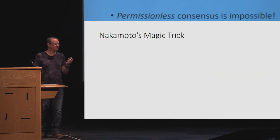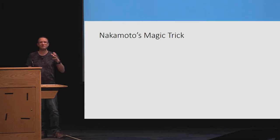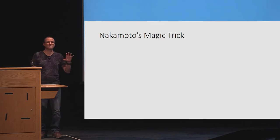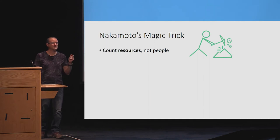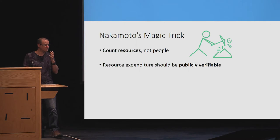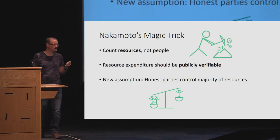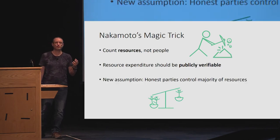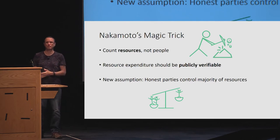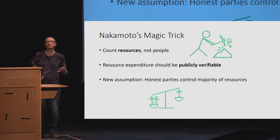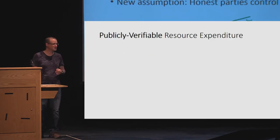So what can we do? I think this is maybe the main interesting new idea that Satoshi Nakamoto had with Bitcoin: instead of counting people and doing a consensus with a majority of people, what we're going to do is count resources. If we use resources that are publicly verifiable — so we can check that somebody actually expended their resource — then we can switch the assumption from an honest majority of parties to an honest majority of resources, and suddenly the problem becomes possible even in the permissionless setting.